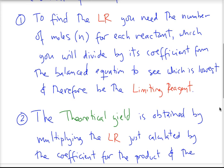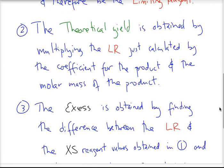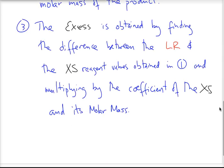The second step, once we have the limiting reagent, is we take that number — the number of moles divided by the coefficient — and multiply it by the coefficient of the product that the question is asking us about, and then by the molar mass of that product. That will give us the theoretical yield. When we calculate excess, we find the difference between the two values of moles divided by coefficient, then multiply that difference by the coefficient of the non-limiting reagent and by its molar mass to get the mass of the excess.